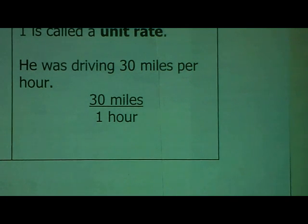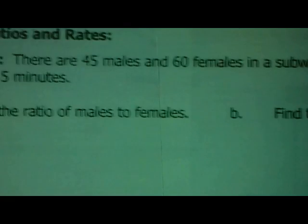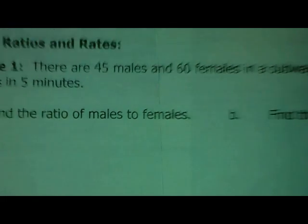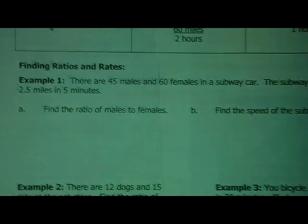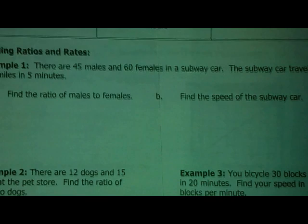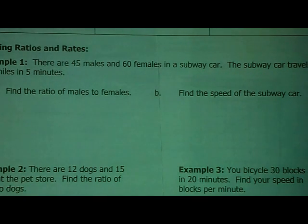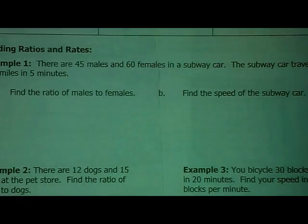Alright. Get ready for the examples. The first example says that there are 45 males and 60 females in a subway car. And the subway car travels 2.5 miles in five minutes. I hope it's a large subway car. It's like 105 people. So, hopefully it's big enough.